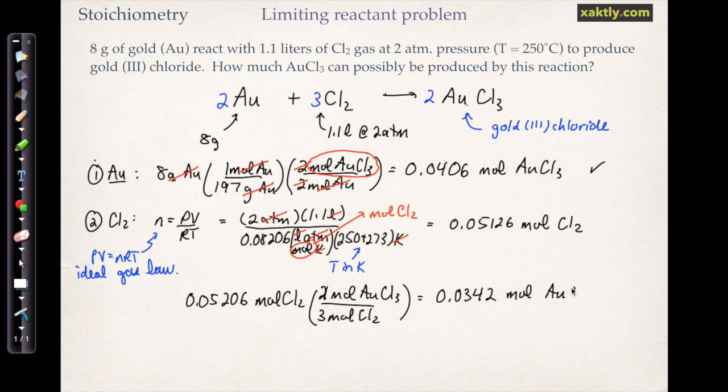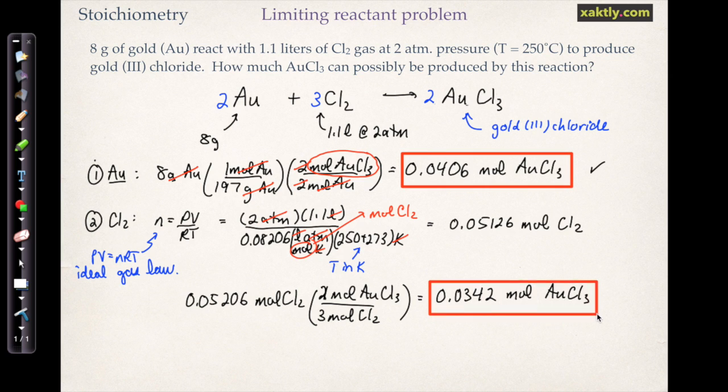And you can see that that's less than in the gold calculation above, so that our chlorine is the limiting reactant. What that means is that as this reaction goes along, all the chlorine is going to get used up, and the reaction is going to stop before we use all of our gold.